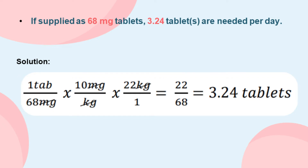If supplied as 68-milligram tablets, how many tablets are needed per day? To calculate, 1 tablet divided by 68 milligrams is multiplied by 10 milligrams per kilogram and by 22 kilograms. Cancel out the common units of measurement. We come up with the answer: 3.24 tablets per day.